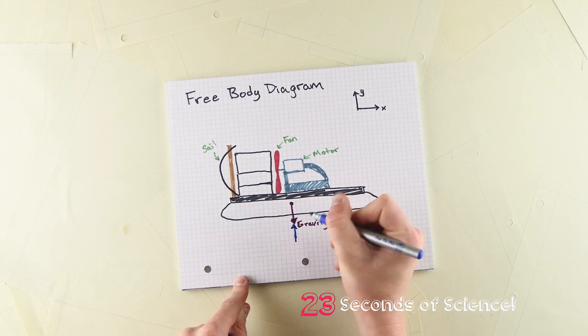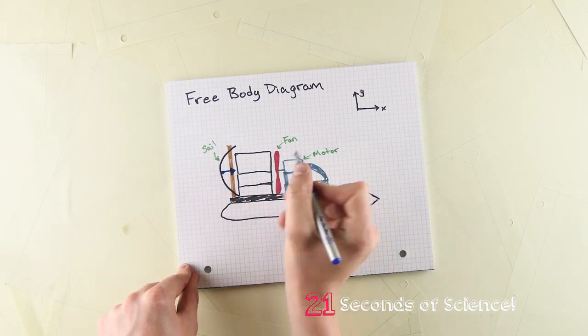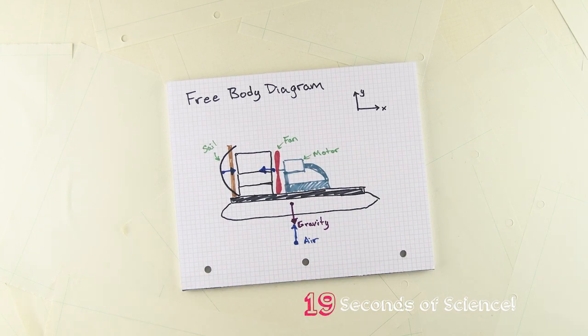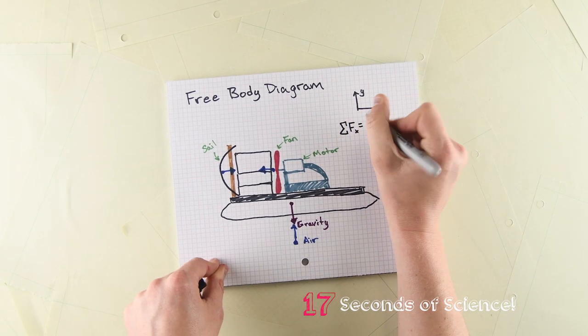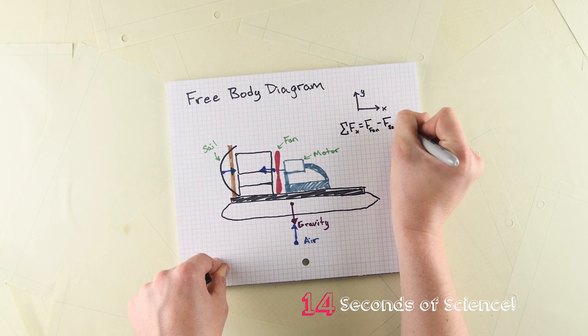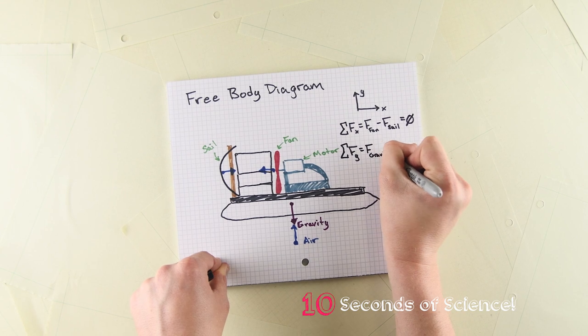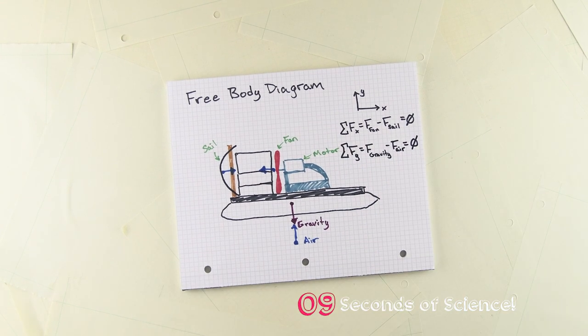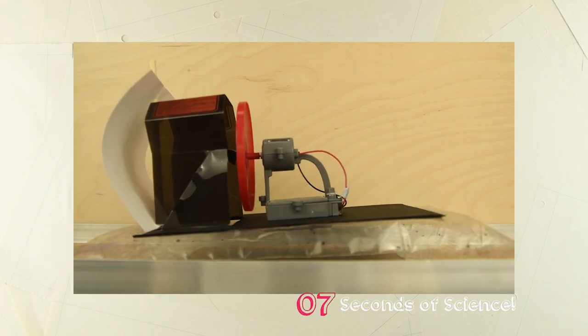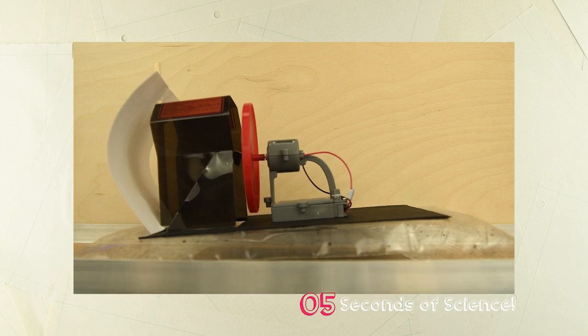In engineering and physics, we can use a free body diagram to show how these forces balance. In the horizontal direction, the force of the fan is balanced by the force of the air hitting the sail. While in the vertical direction, the force of gravity is balanced by the force of the air cushion under the hovercraft. Since all the forces balance and sum to zero, the hovercraft can't move.